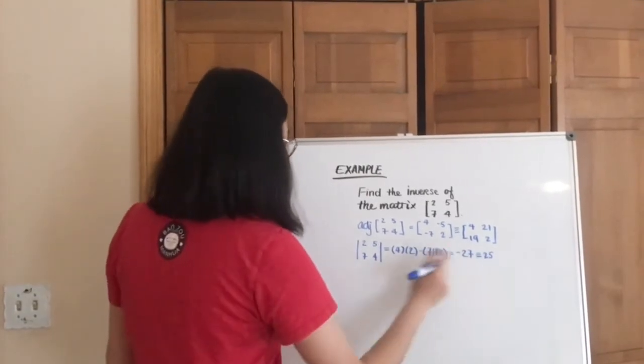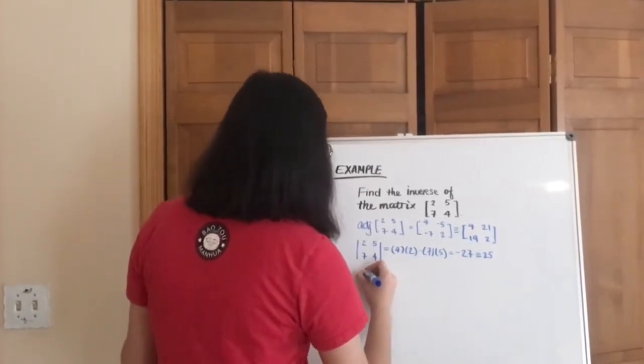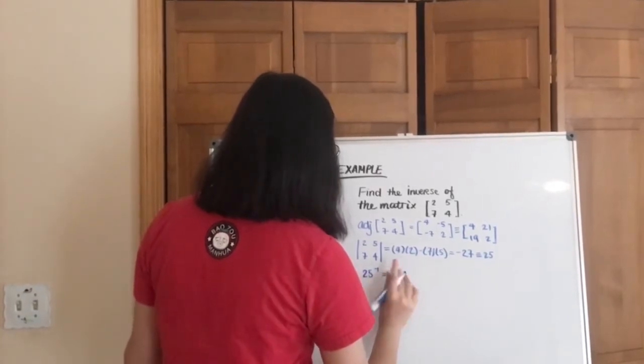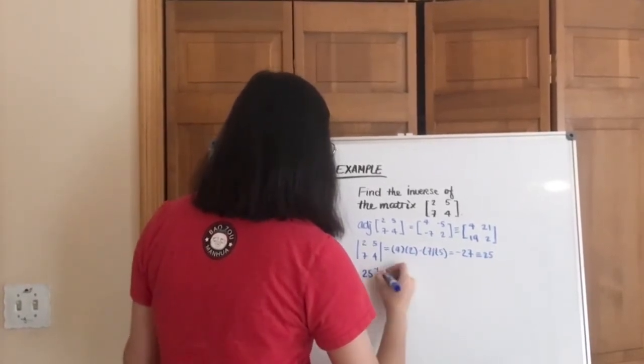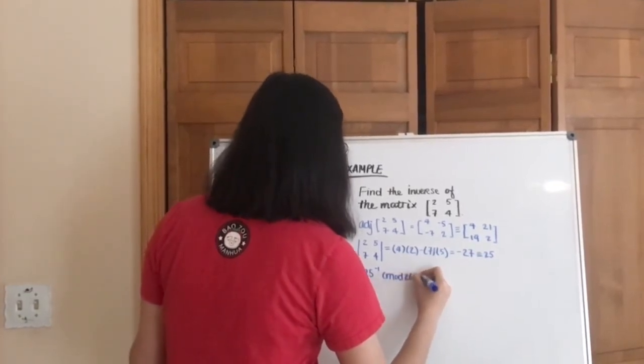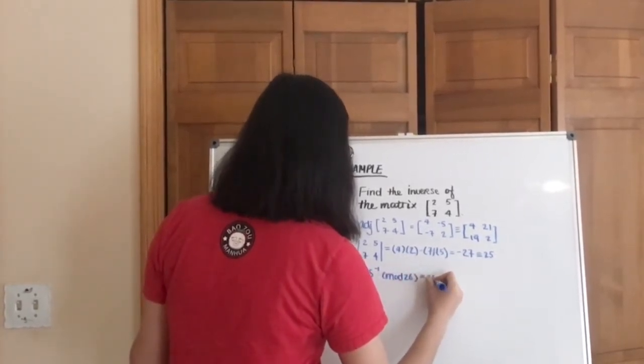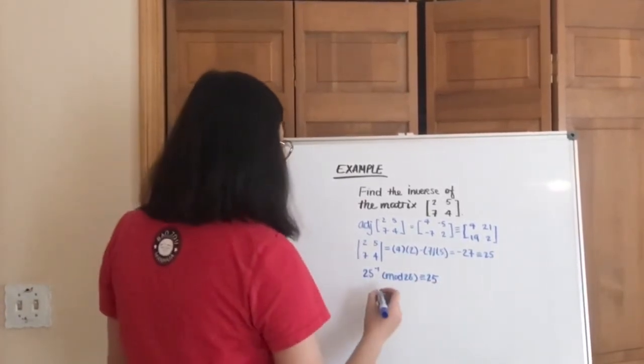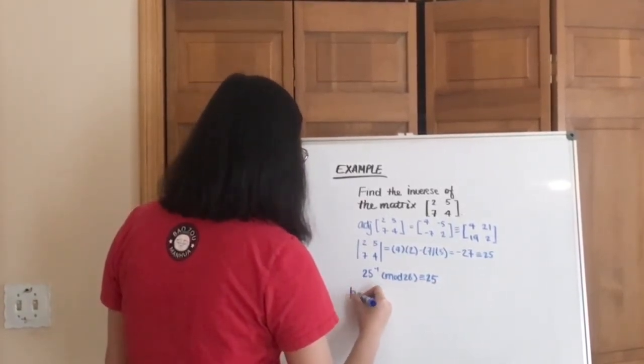So now we need to take the inverse of 25 in mod 26. And we know that the inverse of 25 is just 25 itself. And then the next step, I'm just going to put key inverse here.